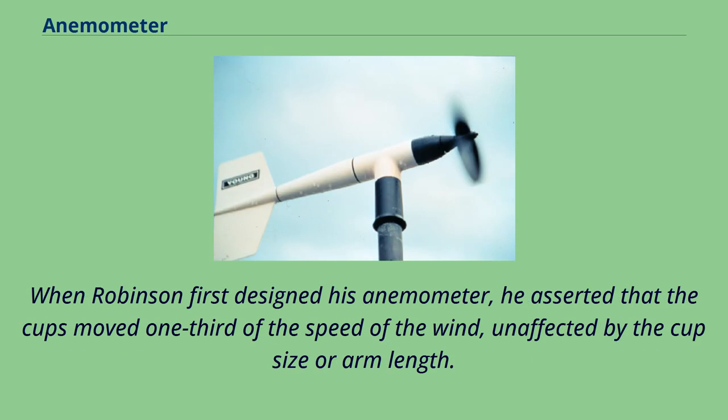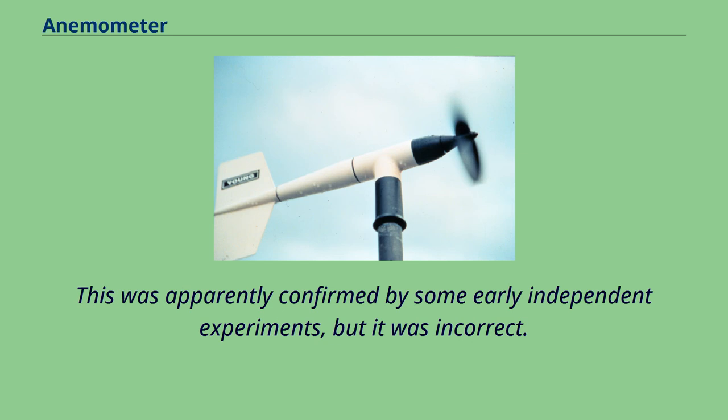When Robinson first designed his anemometer, he asserted that the cups moved one-third of the speed of the wind, unaffected by the cup size or arm length. This was apparently confirmed by some early independent experiments, but it was incorrect.